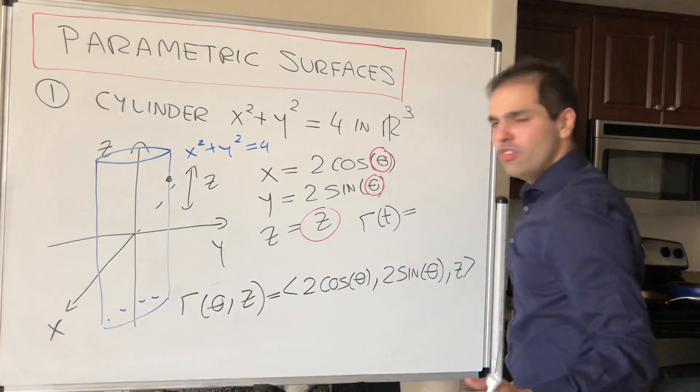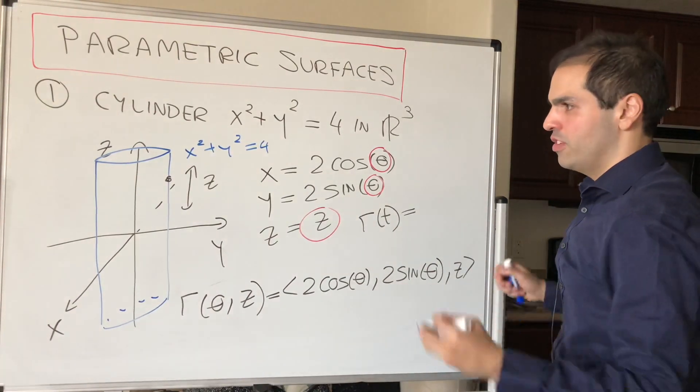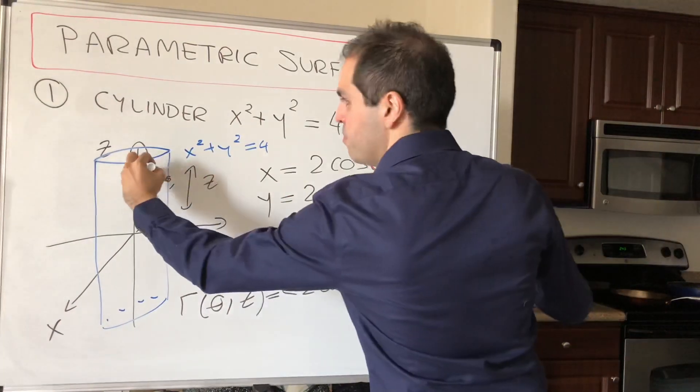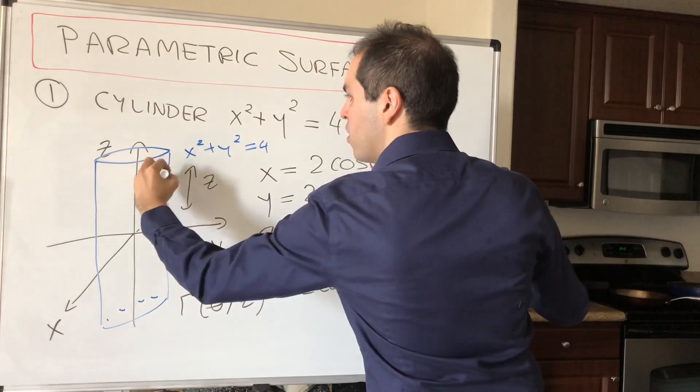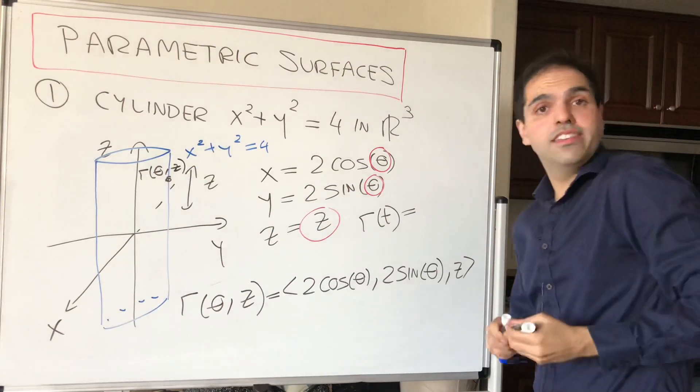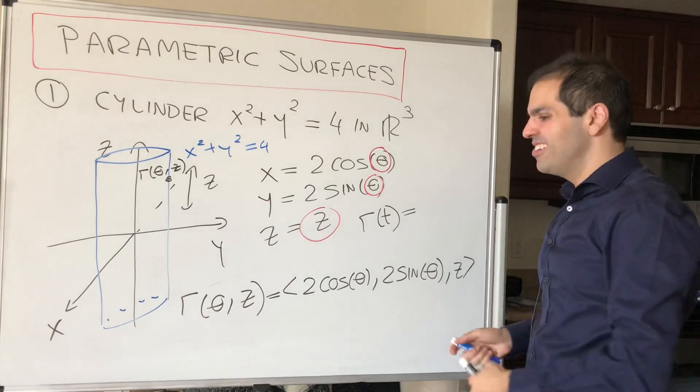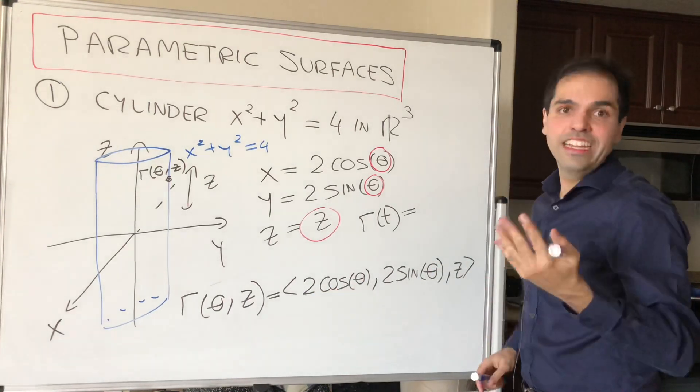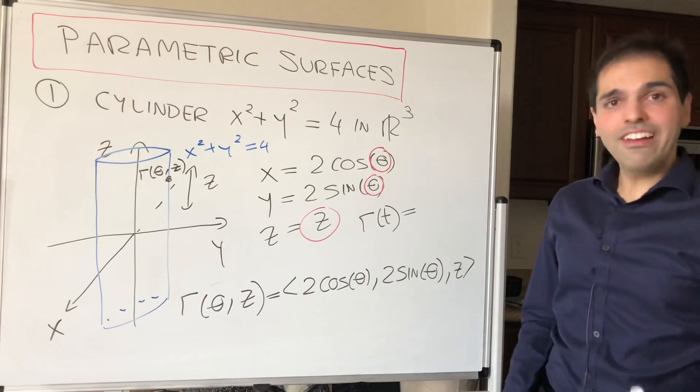Which I would like you to compare to the parametric equation of the line, which would just be r of t equals something. Here we have two variables, which is a surface. And again, which we can depict here as just being r theta z. So as I said, it's something you know how to do, but we just write it in a different way. All right, next example.